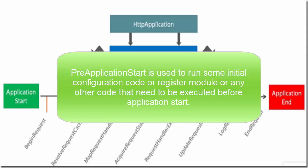The pre-application start event is another option at the assembly level to register something before the application start. It can be used to run some kind of initial configuration code, to register a module, or any other code that needs to be executed before the application start event happens.